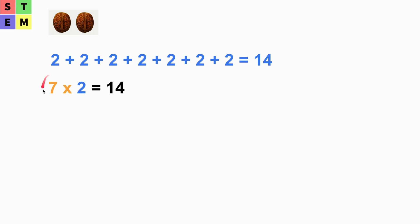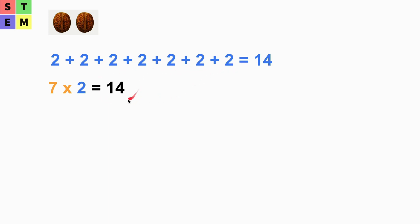We have seven times of twos, so we use × to represent multiplication. Seven times two equals two plus two plus two plus two plus two plus two plus two, which equals 14.